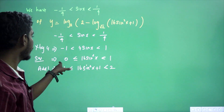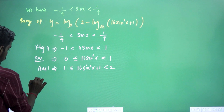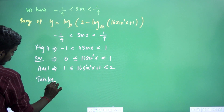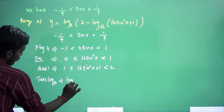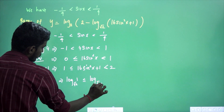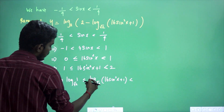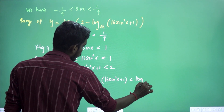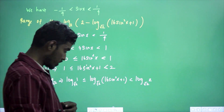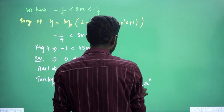So 1 ≤ 16sin²x + 1 < 2. Now applying log_{√2} — since √2 > 1, the inequality direction is preserved: log_{√2}(1) ≤ log_{√2}(16sin²x+1) < log_{√2}(2).